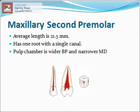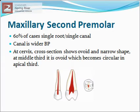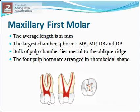The maxillary second premolar usually has one root with a single canal. The pulp chamber is wider buccopalatally and narrower mesiodistally; in cross section the pulp chamber has a narrow, ovoid shape. In more than 60 percent of cases, a single root with a single canal is found. In the case of a single canal, it will be wide buccopalatally forming a ribbon-like shape; in cross section the canal will be ovoid and narrow at the cervical and middle third, becoming circular at the apical third.